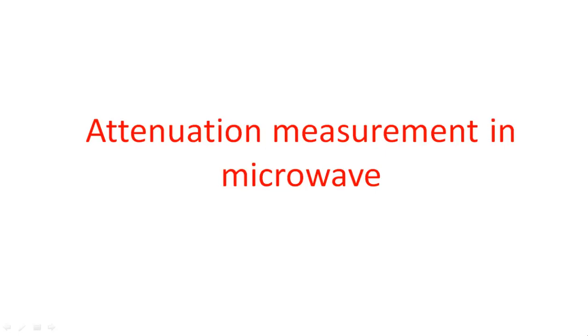This video explains attenuation measurement in the microwave. This is another type of measurement in the microwave bench setup where attenuation is going to be measured. Attenuation is nothing but degradation in the electromagnetic signal - more specifically, degradation in the amount of electromagnetic signal power.